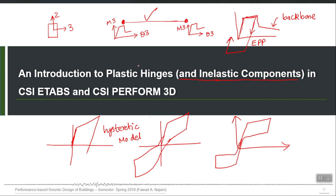One important concept to discuss is acceptance criteria, which is directly related to the backbone and hysteretic behavior. Acceptance criteria simply means capacities — the capacities corresponding to different performance levels. For example, the plastic rotation corresponding to IO level, plastic rotation corresponding to LS, and CP. These numbers, which represent the capacities for each performance level, are called acceptance criteria. They are a third input which you have to provide while defining a plastic hinge.